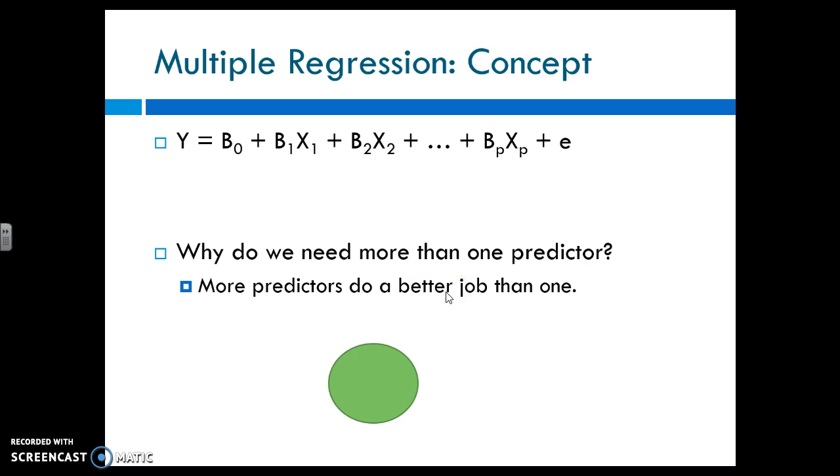Why would we want more than one predictor? It does a better job. So if we are trying to predict this green circle and I use one blue circle, then I am predicting this much of the green. That's not a lot. But if I add another predictor, I'm now predicting even more of this green circle. So more predictors are explaining more of Y.